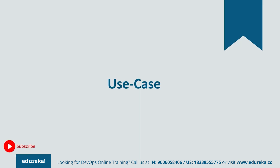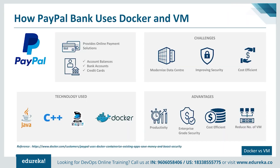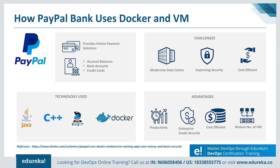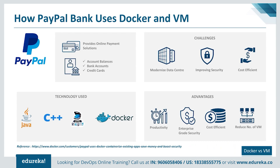Now let's look at a real-life case study of how Docker containers and virtual machines can complement each other. PayPal provides online payment solutions through account balances, bank accounts, credit cards, or promotional financing without sharing financial information. Today, PayPal leverages open-source and runs more than one lakh virtual machines. One of PayPal's biggest desires was to modernize their data center infrastructure — making it more on-demand, improving security, meeting compliance regulations, and making everything cost-efficient — by Dockerizing their existing Java and C++ legacy applications and deploying them as containers.